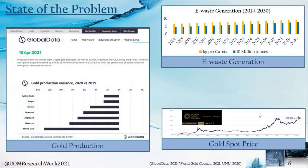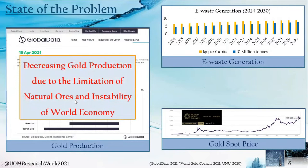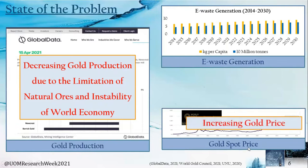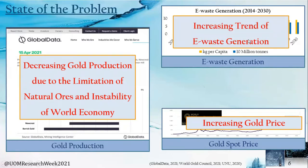As you can see, gold production has decreased by 6.5% in major gold mining companies due to the limitations of natural resources and the instability of the world economy. Therefore, the deficiency of gold has become a major issue. According to the World Gold Council, the spot price of gold has shown a significant increasing trend in the last two decades, due to the fourth and fifth industrial revolutions. There is also a continuous increment in e-waste generation and per capita e-waste generation. Since gold is a major metal used in the electronic industry, there may be potential to recover gold from e-waste.